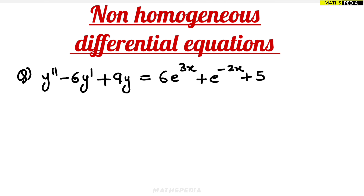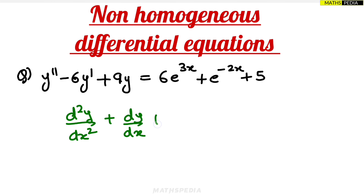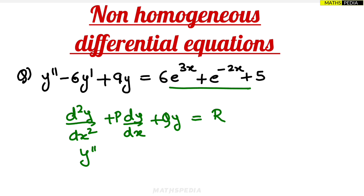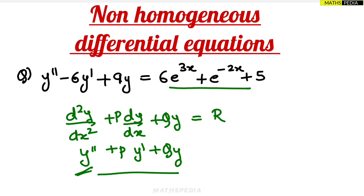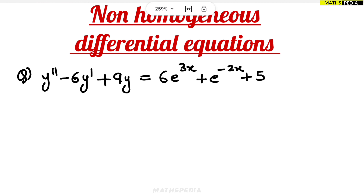It is important to identify this type of non-homogeneous equation. The standard form is d²y/dx² + p·dy/dx + q·y = f(x), where p and q are constant values. Here, d²y/dx² means y double-dash (second order), and dy/dx means y-dash (first order). So when you see y'' and y' in the question, recognize them as d²y/dx² and dy/dx respectively.